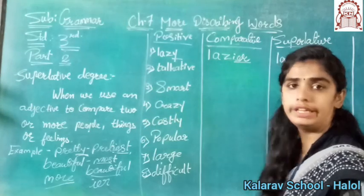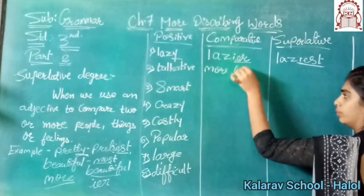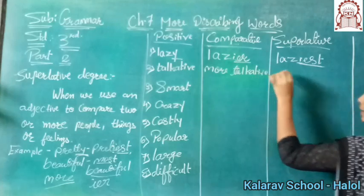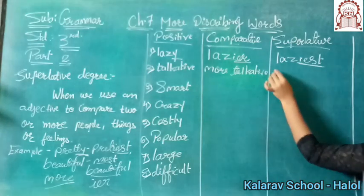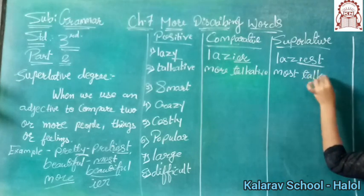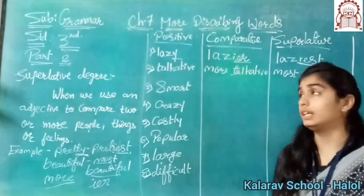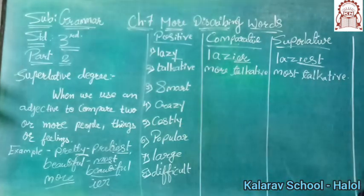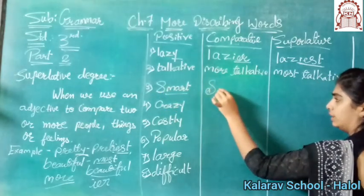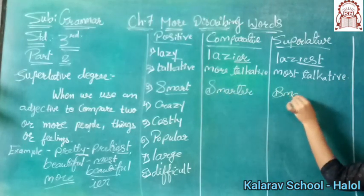Now see the next number. So in comparative it will be 'more,' and in superlative it will be 'most.' And the third number is 'smart.' You have the positive degree, so: smart, smarter, and smartest.